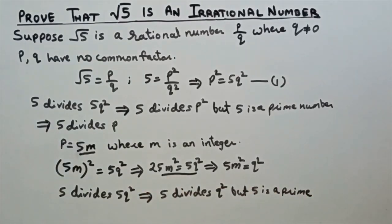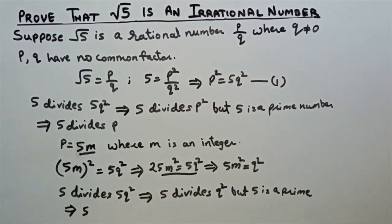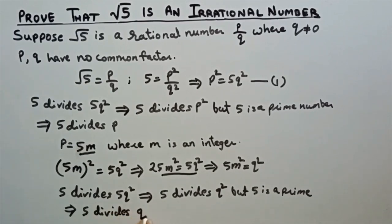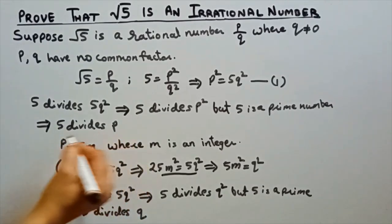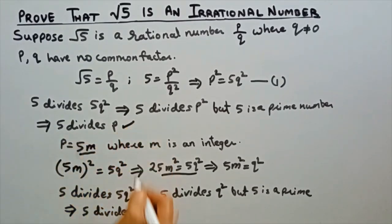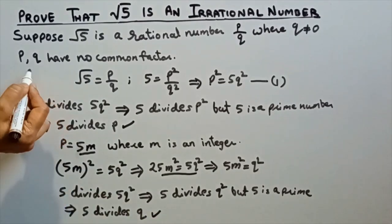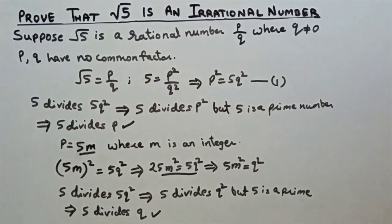Since 5 is prime and 5 divides q squared, this implies 5 divides q. And we already showed 5 divides p. But we supposed that p and q have no common factors.